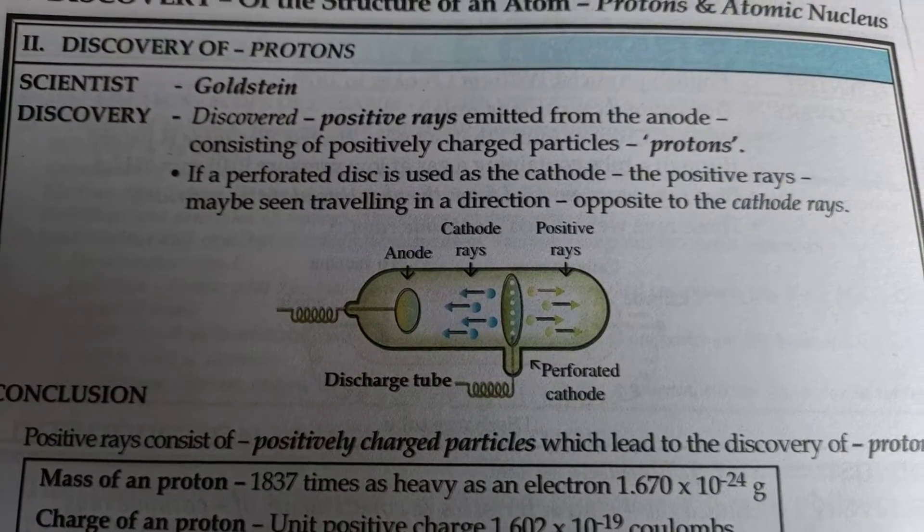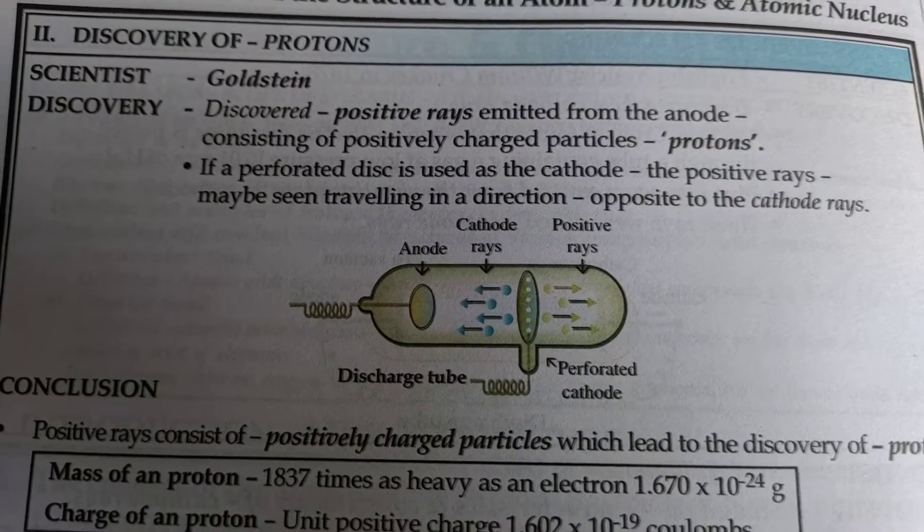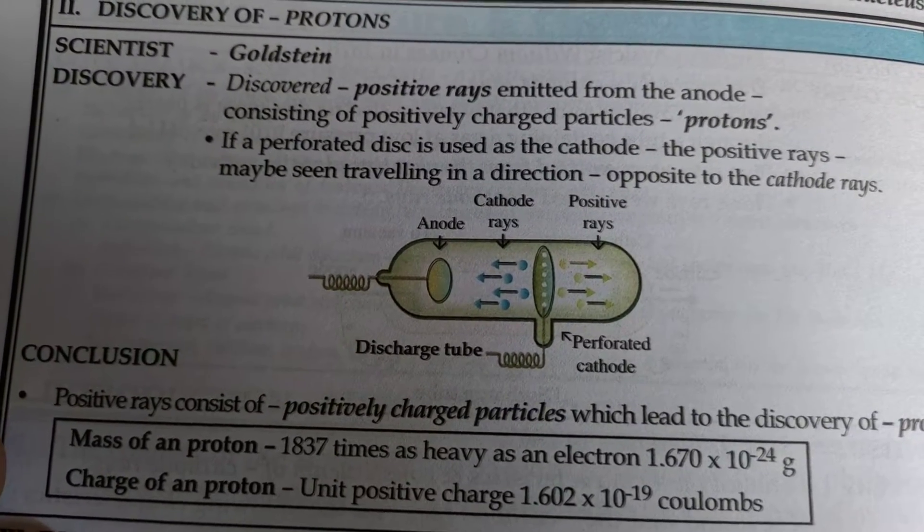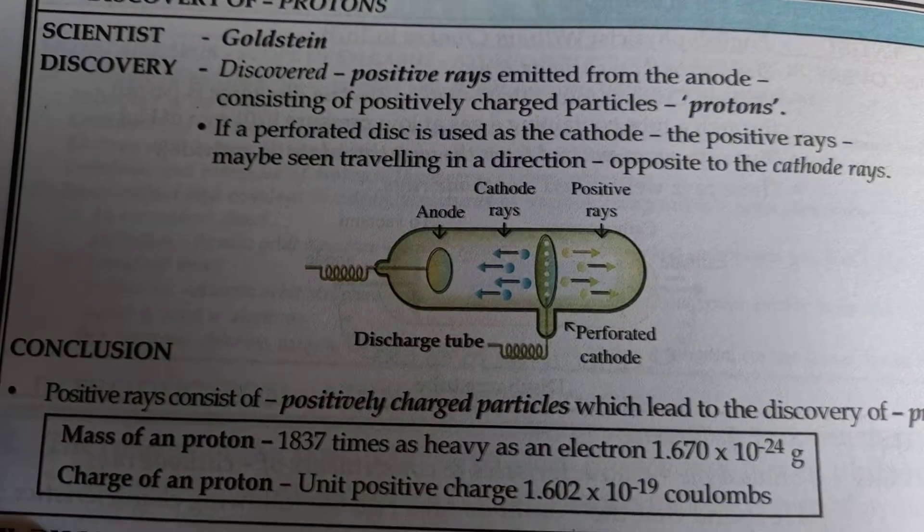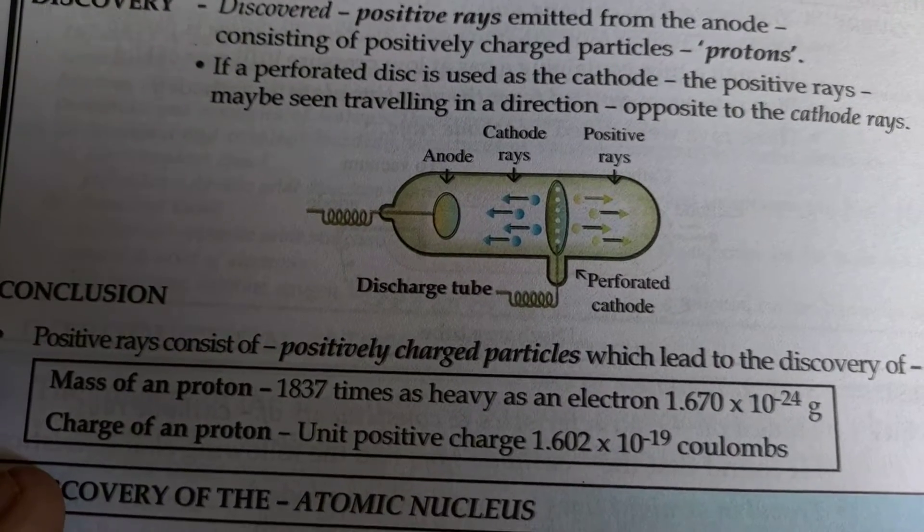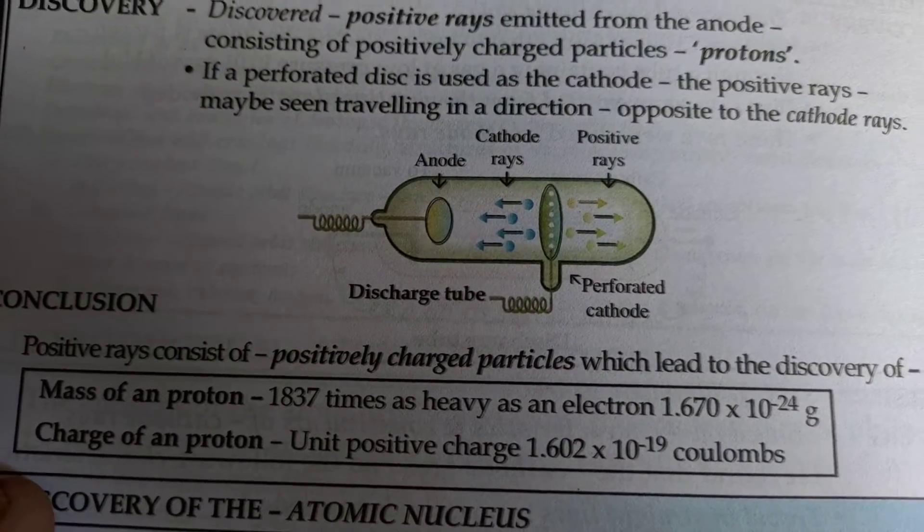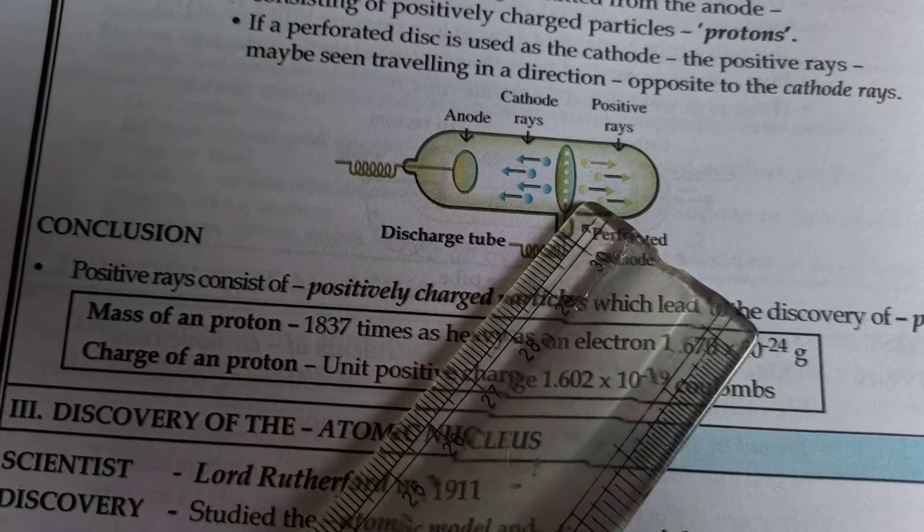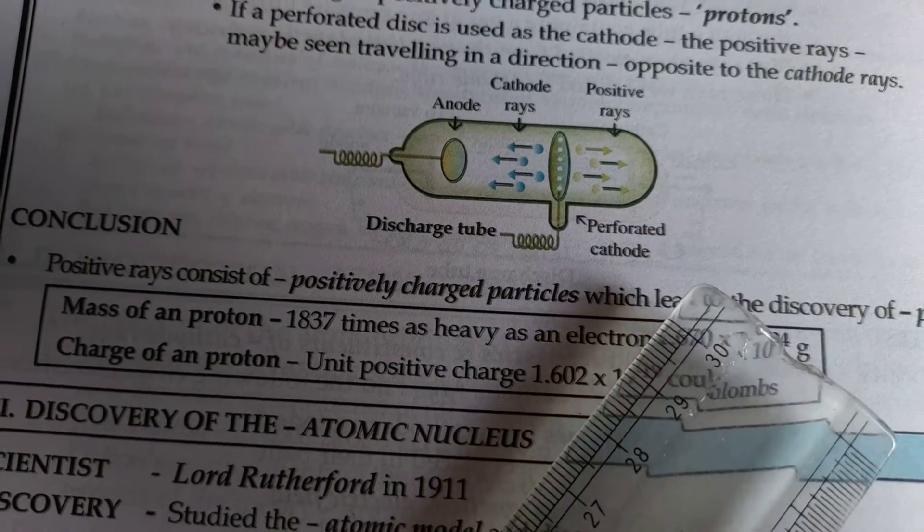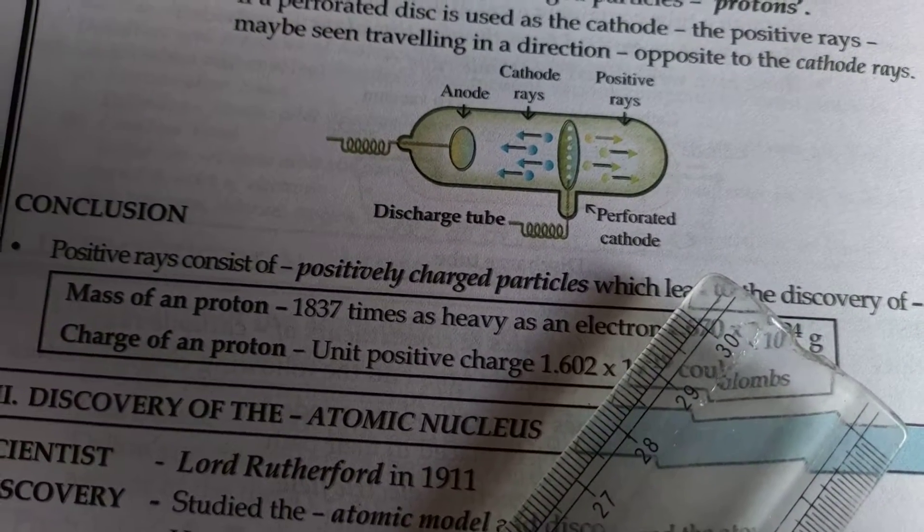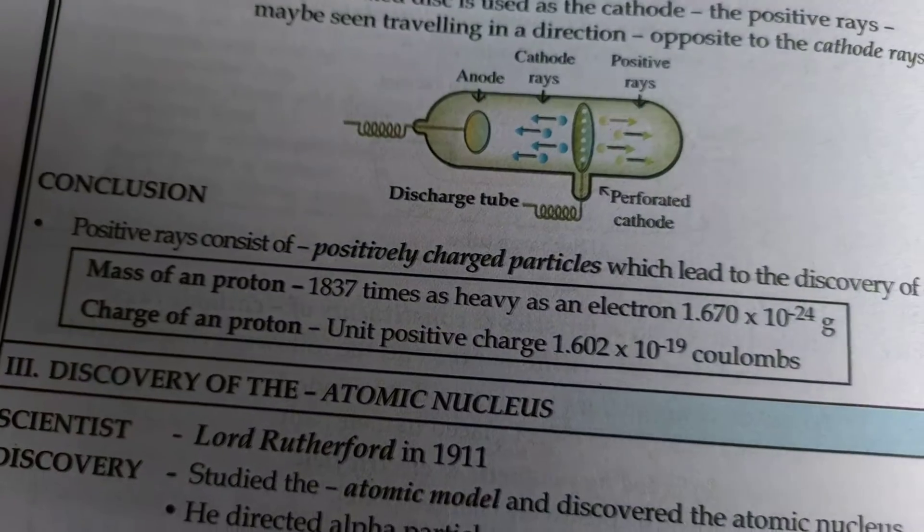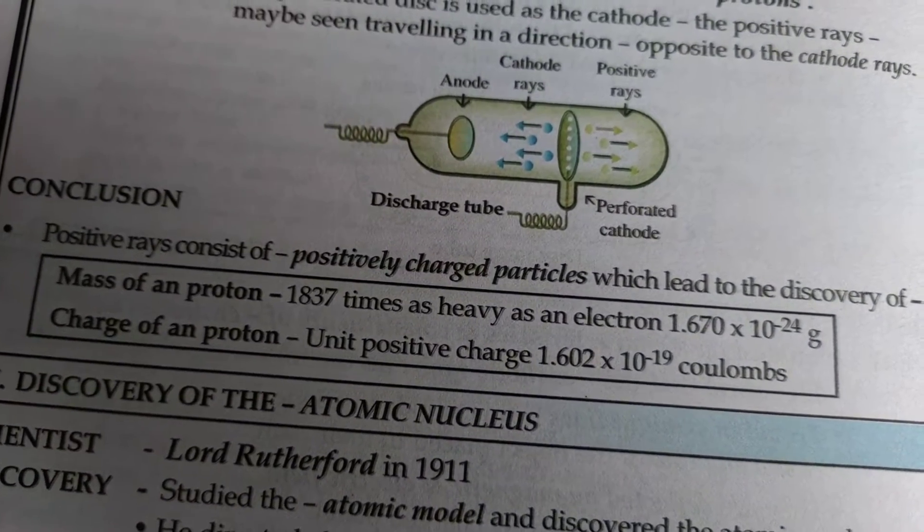But along with the discovery of electron, another intriguing information was found: a negatively charged particle should be balanced by a positively charged particle which was later on called as proton. That was discovered by Goldstein in an experiment where he performed exactly the same as the cathode ray tube experiment. But the funny part was that instead of using a normal plate, he used a perforated plate. The perforated plate means a plate that contains small pores. You can see this plate contains small pores. When that was performed, it was found that the electrons were emitted from cathode.